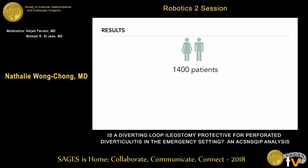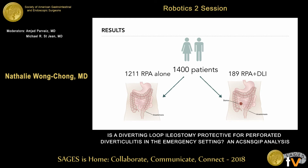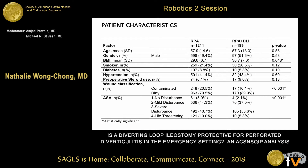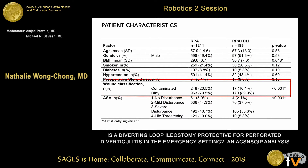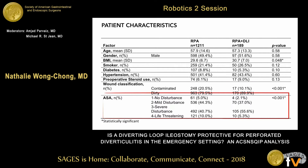We identified 1,400 patients who met our inclusion criteria. The majority — 1,211 patients — had primary anastomosis alone, and 189 had a primary anastomosis with a diverting loop ileostomy. When we looked at patient characteristics, they were similar in terms of age and gender. There was a slightly higher BMI that was statistically significant but not clinically significant. We found that patients with a diverting loop ileostomy had more dirty wounds, and there were some differences in ASA score.